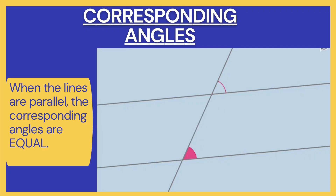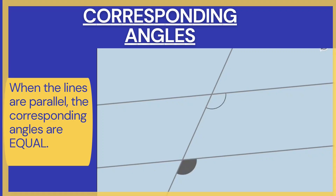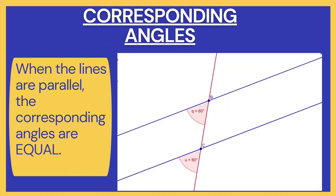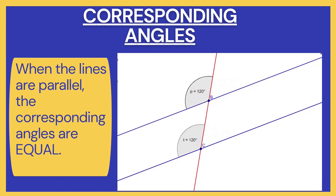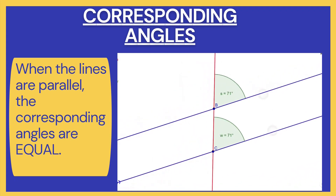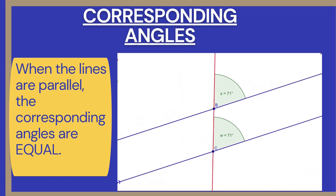The corresponding angles can be on top of the parallel lines, on both the left and right sides, or they can be on the bottom side, but they must be on the same side of the transversal. When the lines are parallel, the corresponding angles are equal. These two pairs shown here are corresponding angles — they are on the same side of the transversal and on top of both parallel lines. Even if I change the distance between the two parallel lines, the corresponding angles will always be equal.